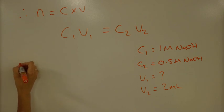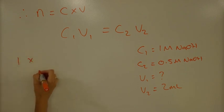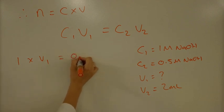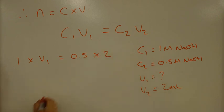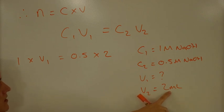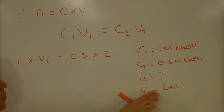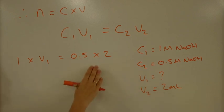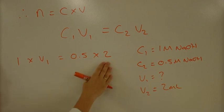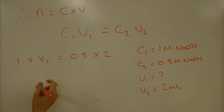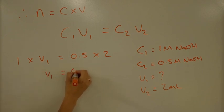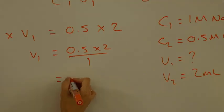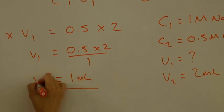Plugging the values in: 1 × V1 = 0.5 × 2 mils. You might think we need to convert 2 mils into litres because molarity uses moles per litre — but whatever units you put in, you get out. So working in mils: V1 = 0.5 × 2 ÷ 1, which gives 1 mil.